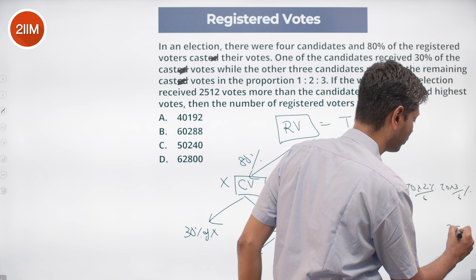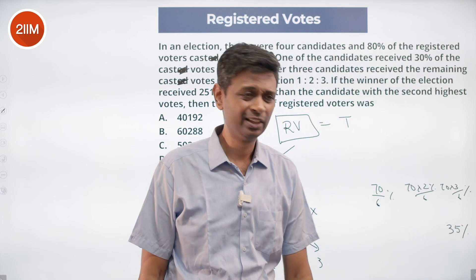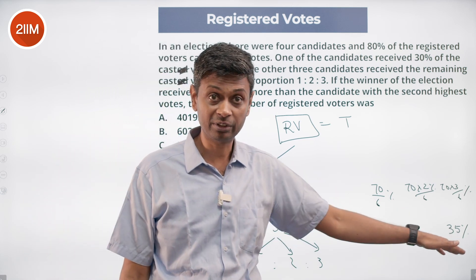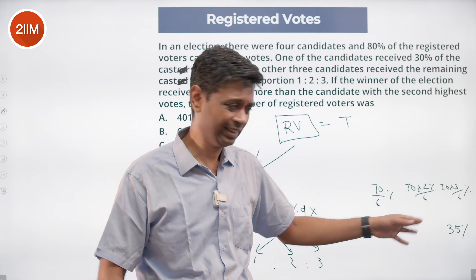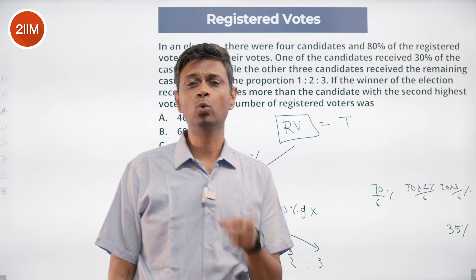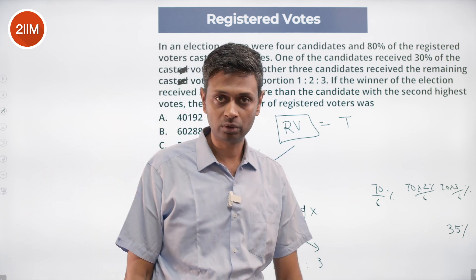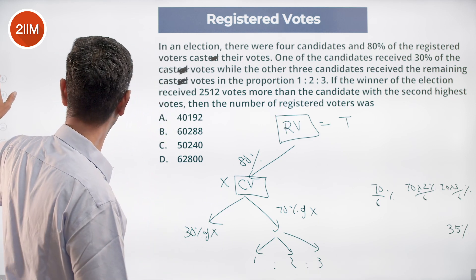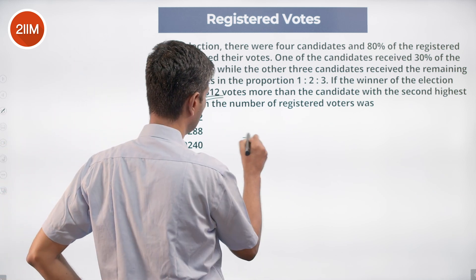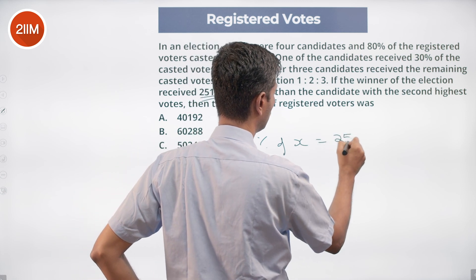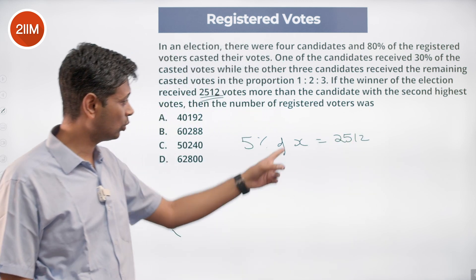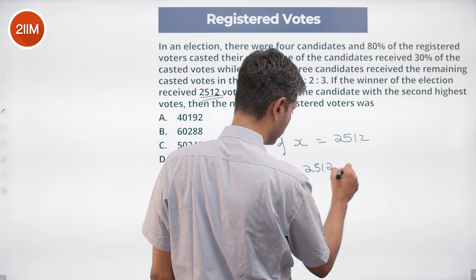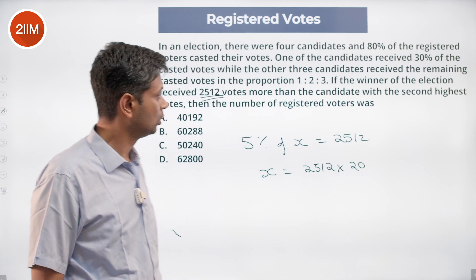This candidate with 35% has won the election. The first candidate already had 30%, and this one has 35%, which is more than 30%. The guy who won has 35% of the total cast votes and the guy who came second has 30% of the total cast votes. The difference between these two is 5%, and that 5% equals 2512 votes. So X multiplied by 5% equals 2512, meaning X equals 2512 into 20.